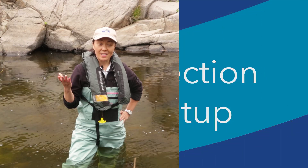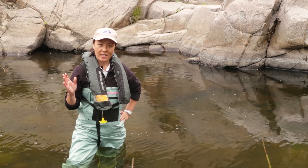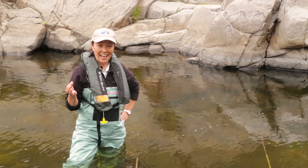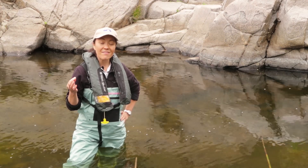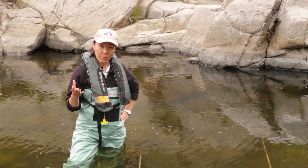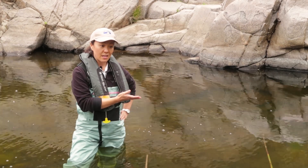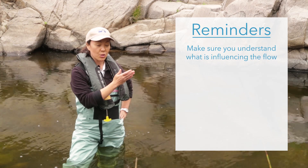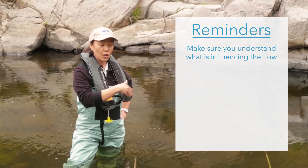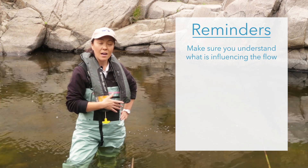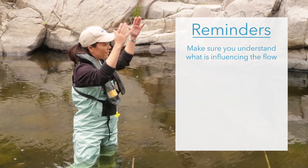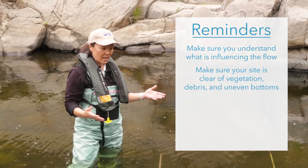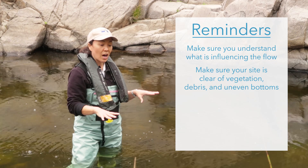Before we start talking about the instrument itself, let's pause for a second and talk about site selection. Although the Flow Tracker is a highly accurate instrument, there are many variables dependent on the operator and on the operator's choice of site. You want to make sure you understand what's controlling or influencing the flow, both upstream and downstream of your measurement. You want to make sure that you have a site that's clear of vegetation and debris, uneven bottom, and rocks.